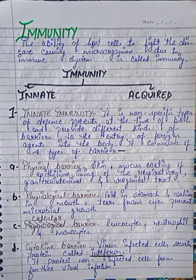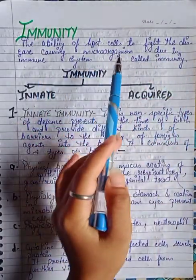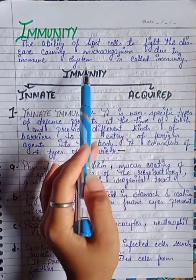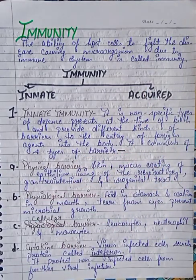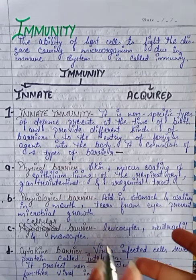Now immunity — today we will cover immunity. The ability of host cells to fight the disease-causing microorganisms due to the immune system is called immunity. Our host cells have the ability to fight against disease-causing microorganisms, and this power comes from our immune system — this is called immunity.